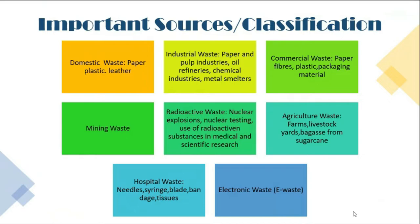Now let us look at the classification — or in other terms, the sources — of solid waste. Domestic waste consists of paper, plastic, leather, wrappers, polythene, and packing materials from everyday items like chips wrappers. Essentially, every kind of thing we use at home can lead to solid waste accumulation and contribute to solid waste pollution.